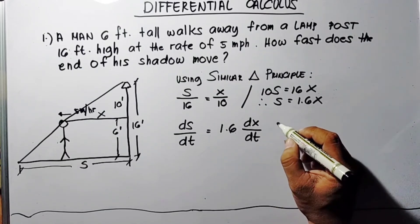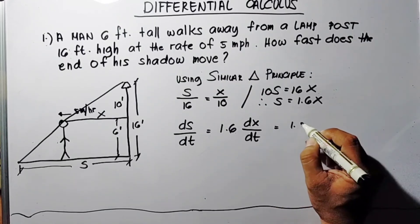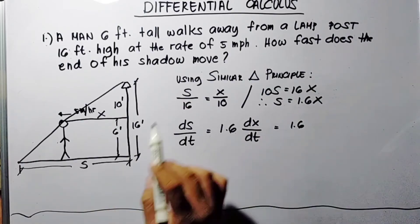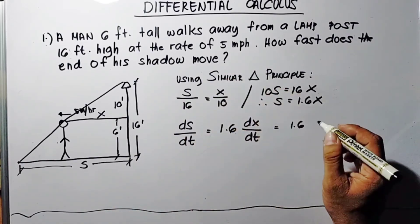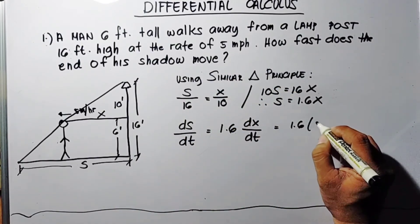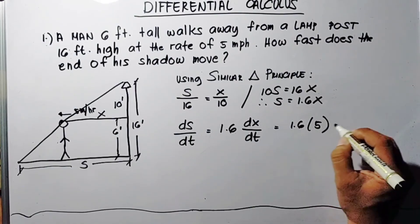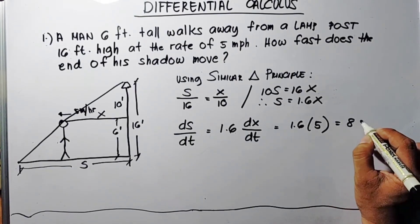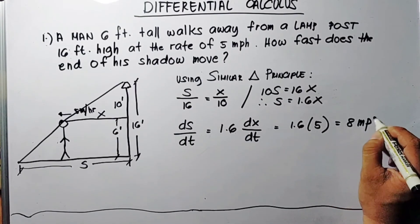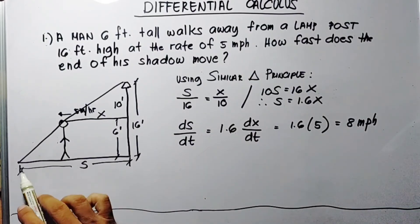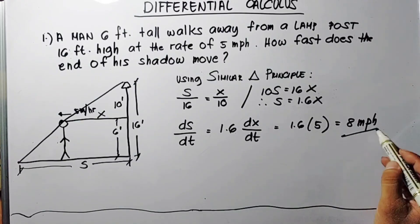The result is 1.6 times dx/dt. The rate is 5, so dx/dt is 5. That will be 1.6 times 5 equals 8 miles per hour. That's how fast the end of the shadow is moving, 8 miles per hour.